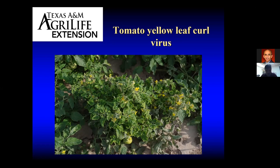Obviously, if you have a tomato that looks like this, as you can tell by the picture, the leaves are not well formed. They're actually tiny. The plant is stunted. You can obviously tell this is an unhealthy tomato plant, and unlikely to get any production at all from this tomato plant based on how seriously it is infected.